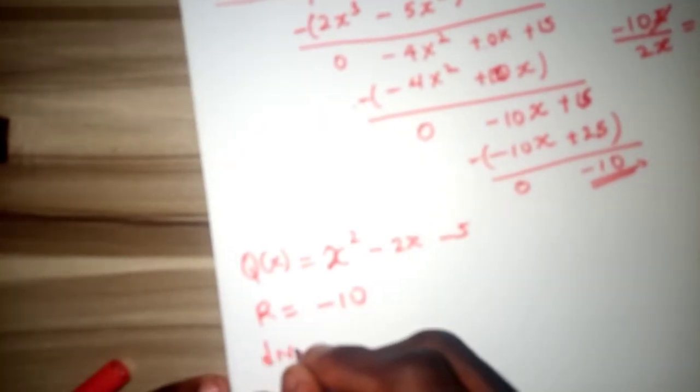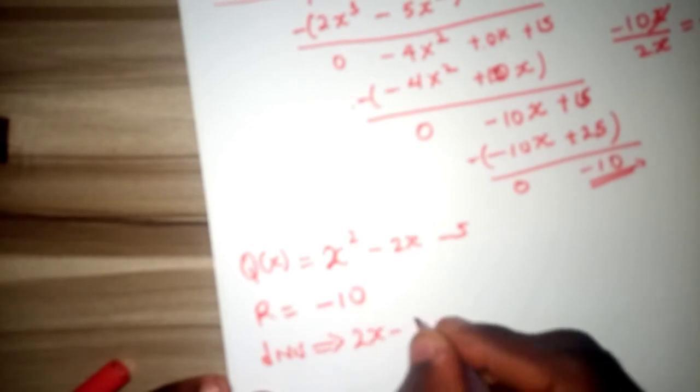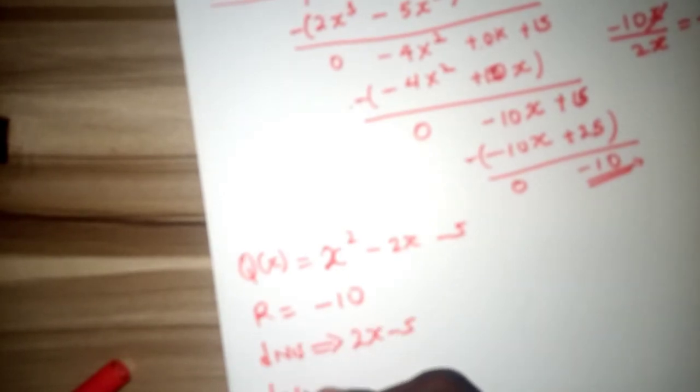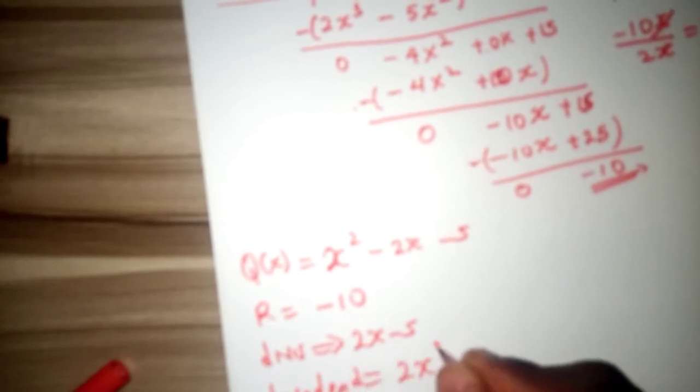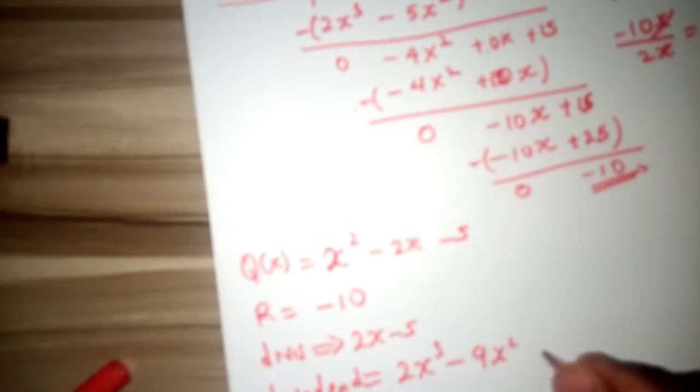The divisor is 2x minus 5, and the dividend is 2x squared minus 9x squared plus 0x plus 15.